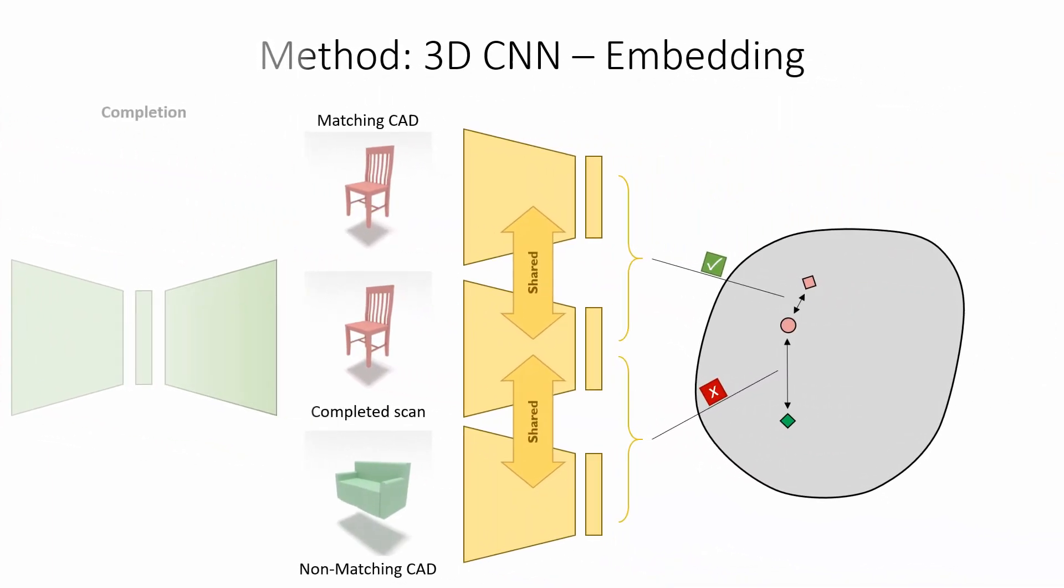Finally, we have an encoder which embeds the complete object together with a matching and a non-matching CAD in a triplet formulation, such that semantically similar objects lie close together while dissimilar ones lie far apart.